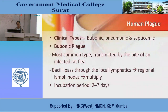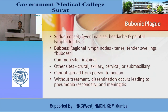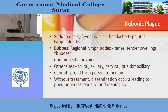Human plague clinical types are bubonic, pneumonic, and septicemic. Bubonic plague is the most common type, transmitted by the bite of an infected rat flea. Bacilli pass through local lymphatics to regional lymph nodes and multiply there. Incubation period is 2–7 days. Sudden onset of fever, malaise, headache, and painful lymphadenitis. Buboes — swollen regional lymph nodes — are common at inguinal sites; other sites include crural, axillary, cervical, or subaxillary. Cannot spread person to person. Without treatment, dissemination occurs leading to pneumonia and secondary meningitis.